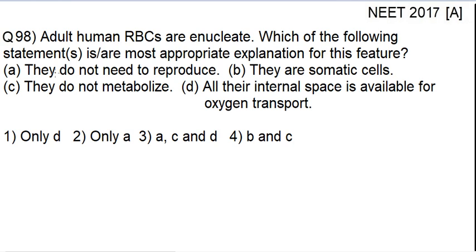There are four options given and you have to find out what are the reasons that the nucleus is absent in the RBC or erythrocytes. The four options are: they do not need to reproduce, they are somatic cells, they do not metabolize, and all their internal space is available for oxygen transport.